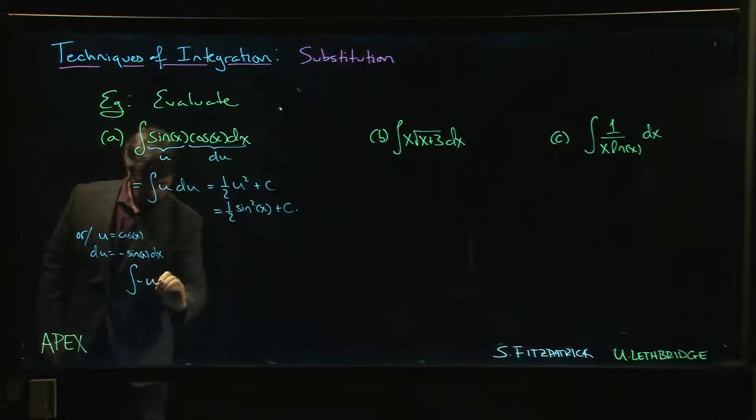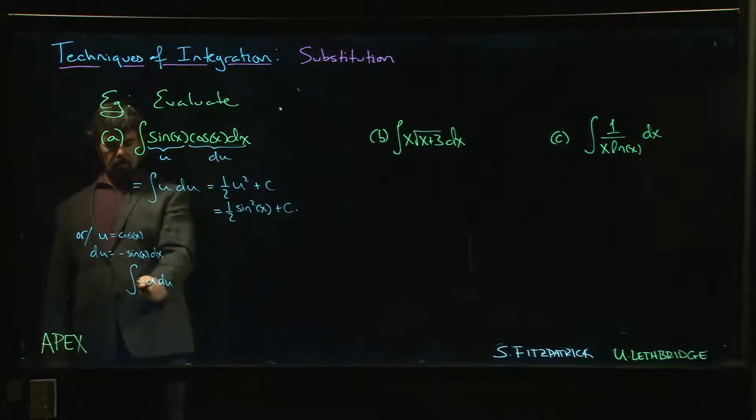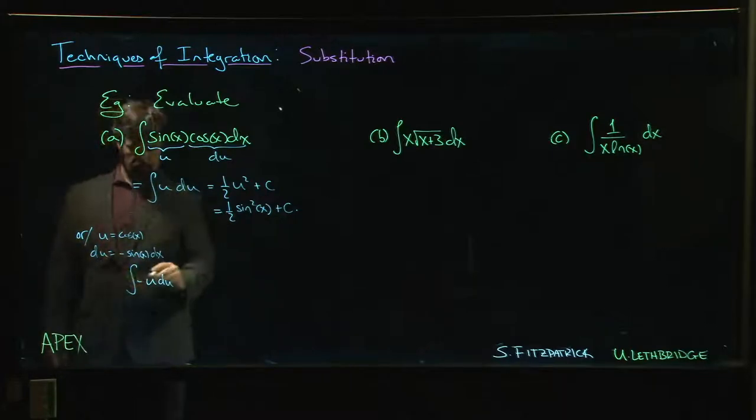And sine x dx becomes minus u, and so we'd get minus one half cos squared x plus c.